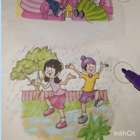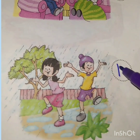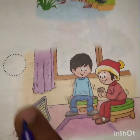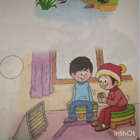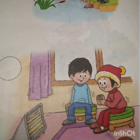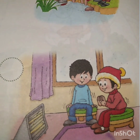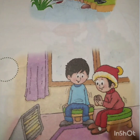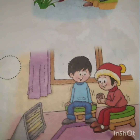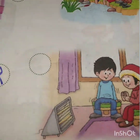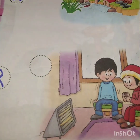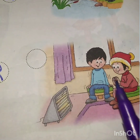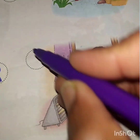So we shall write here R for rainy season. And look over here — these two kids are warming themselves and they have worn warm clothes. So which season is this? Winter season. So what do we write for winter? W.